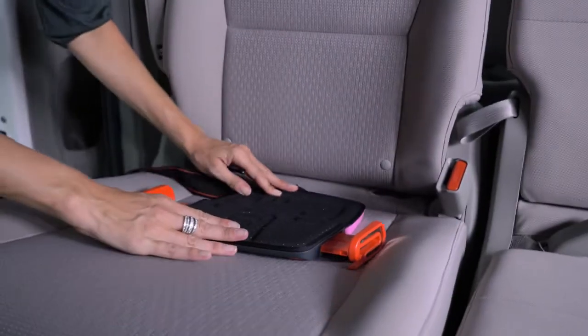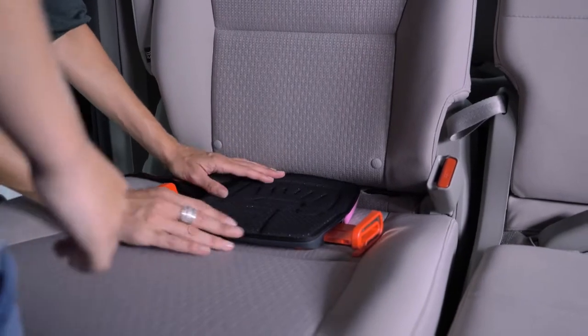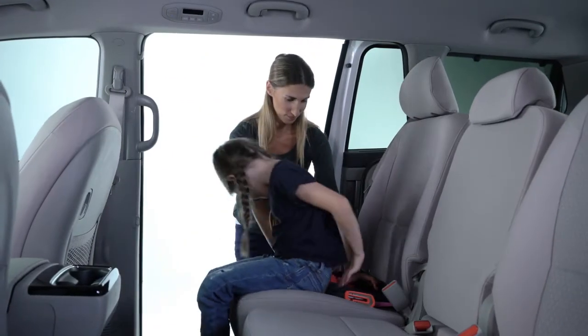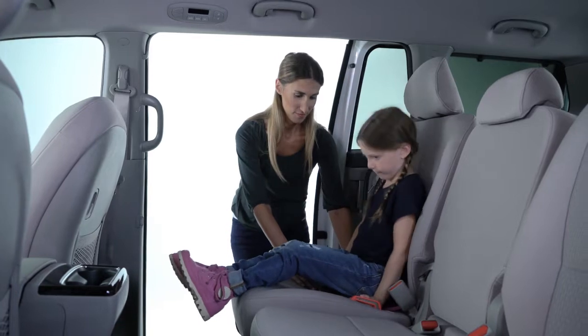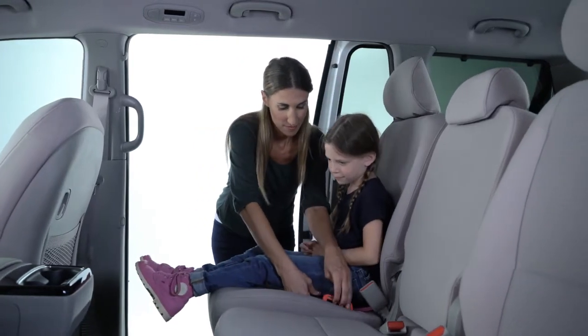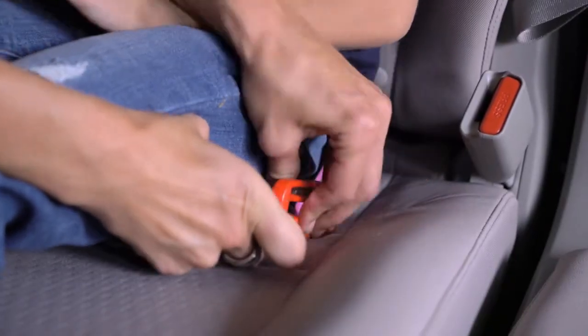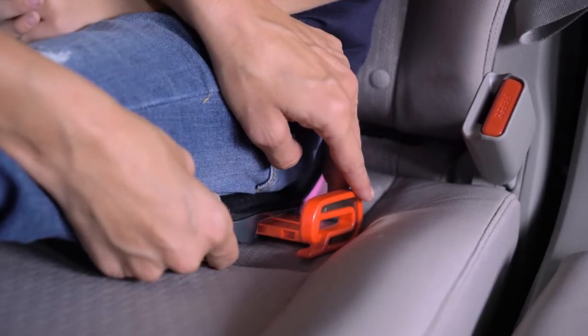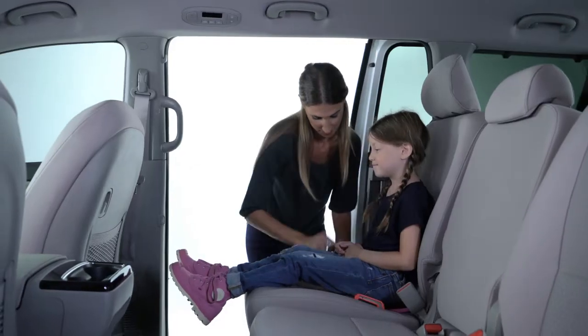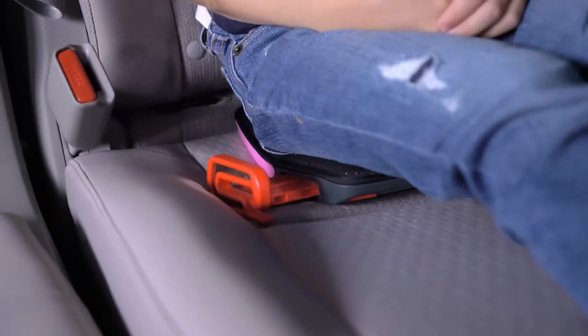Place the booster seat with the lap belt guides extended onto the vehicle seat. With the child sitting on the booster seat, slide the lap belt guides into the position nearest to but not touching the child's thighs. Use the lap belt guide adjustment button like before. Pull on the lap belt guide to check it's locked into position and repeat on the other side.